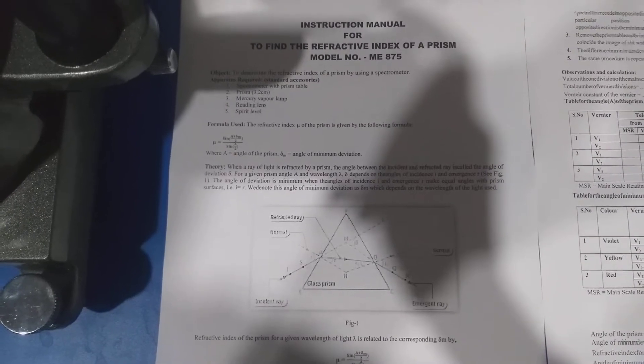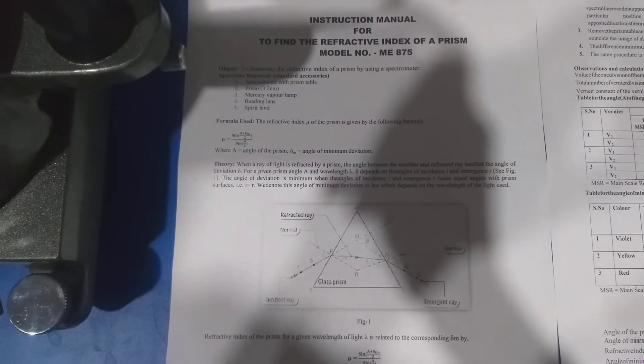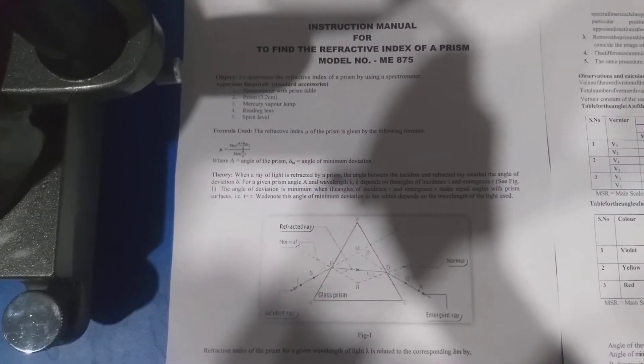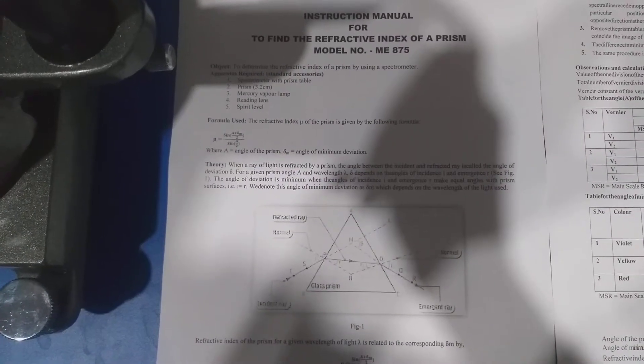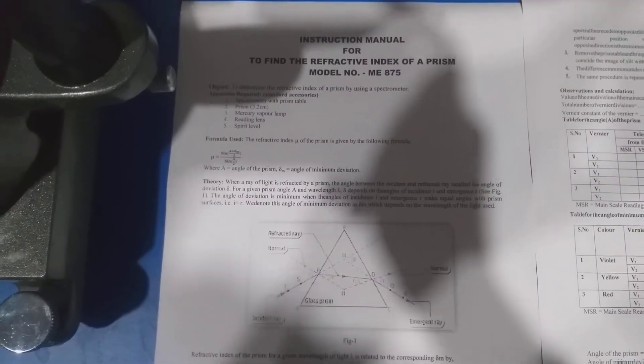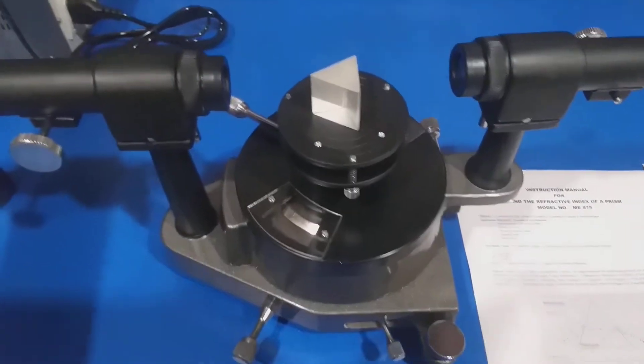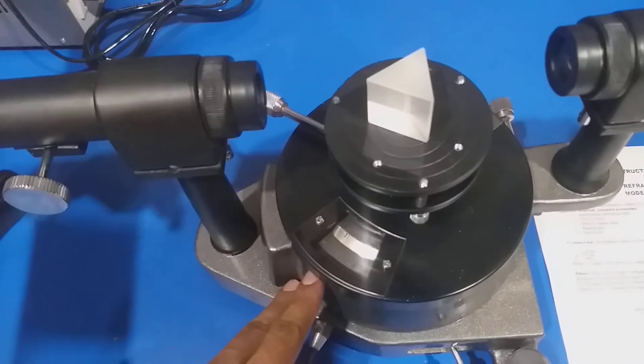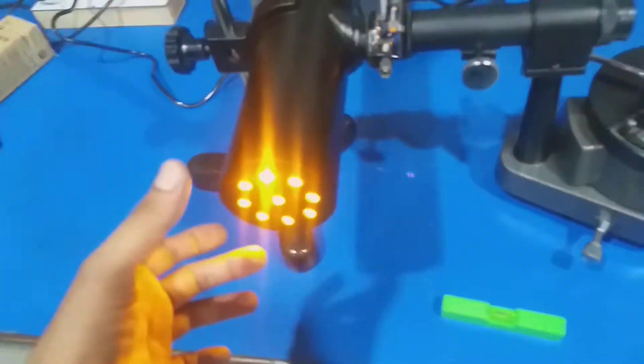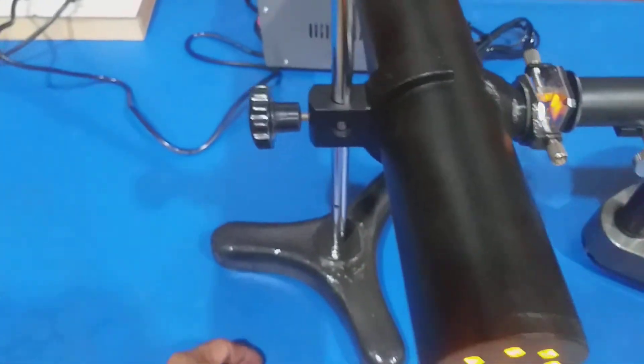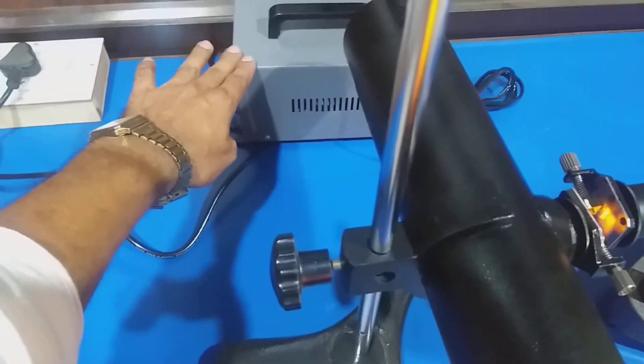Hello everyone, today I'm going to demonstrate how to find the refractive index of a prism. To perform this experiment we require a spectrometer with the least count 30 seconds, sodium lamp with a transformer, and a prism of 32 x 32 mm.